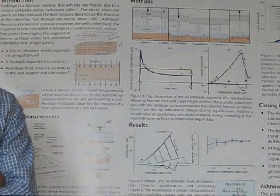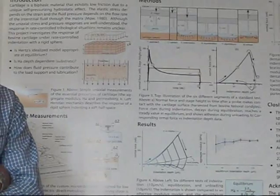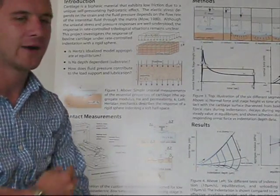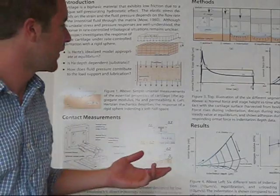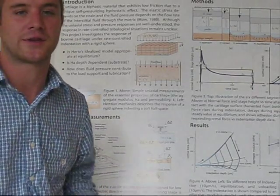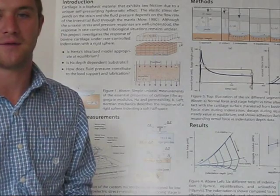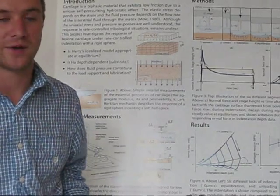Osteoarthritis right now is the leading cause of severe disability in the United States, and it's characterized by a progressive breakdown of articular cartilage like you have in your knee or hip or ankles.